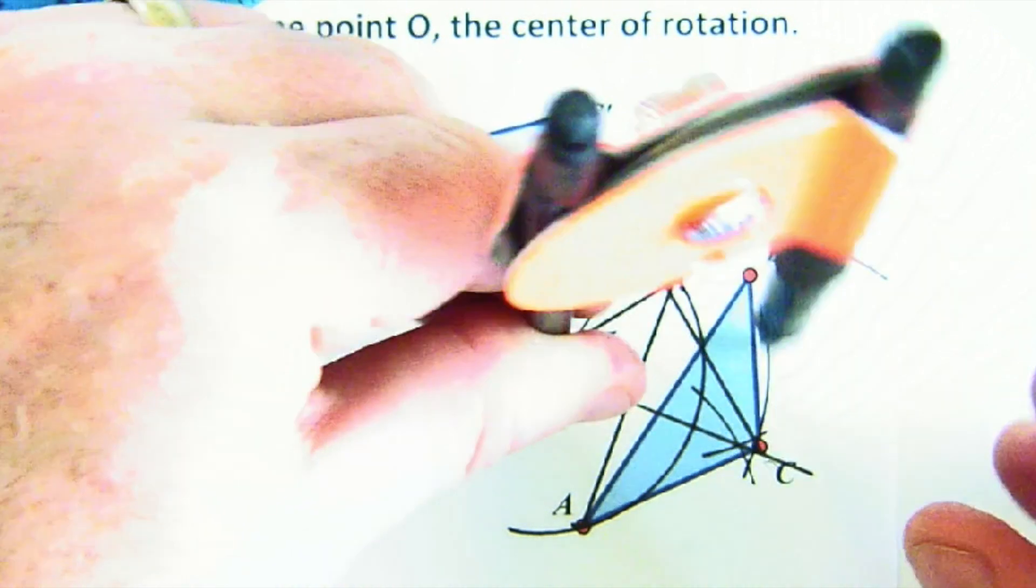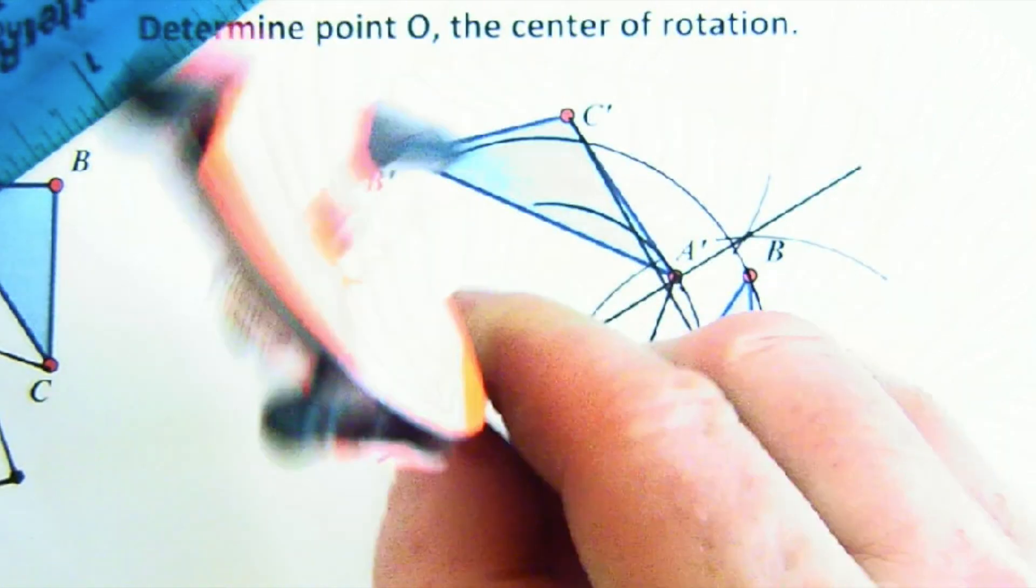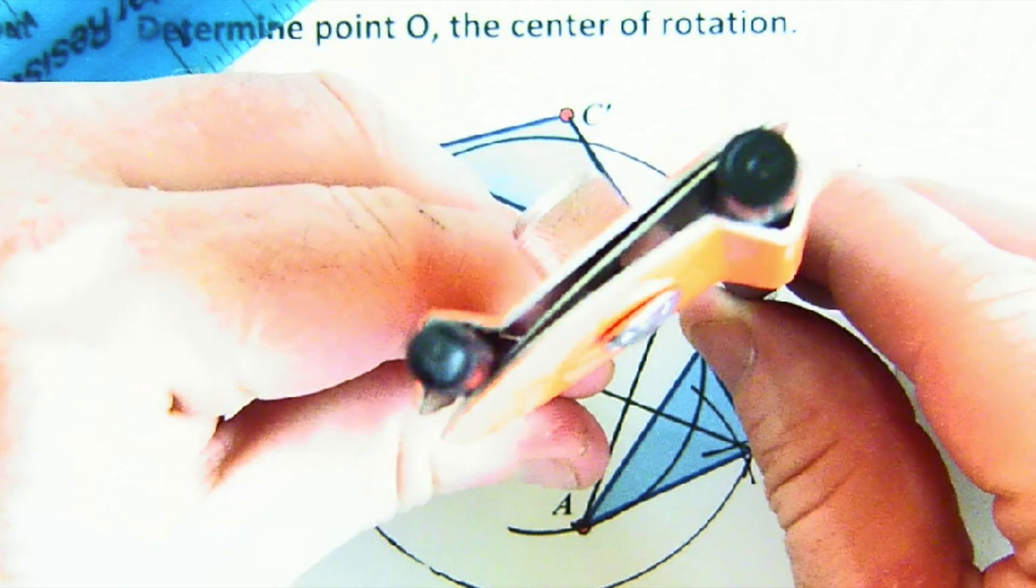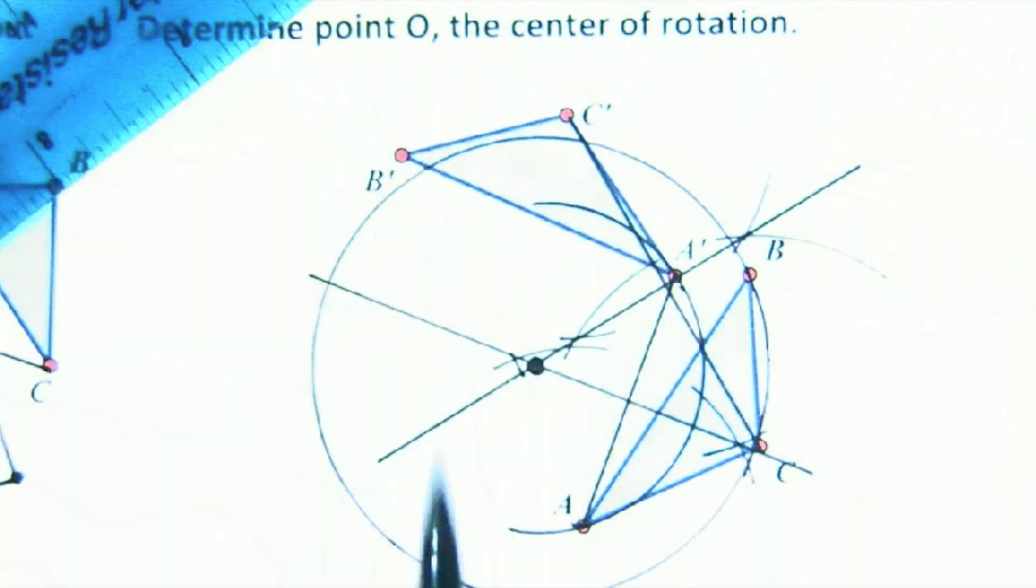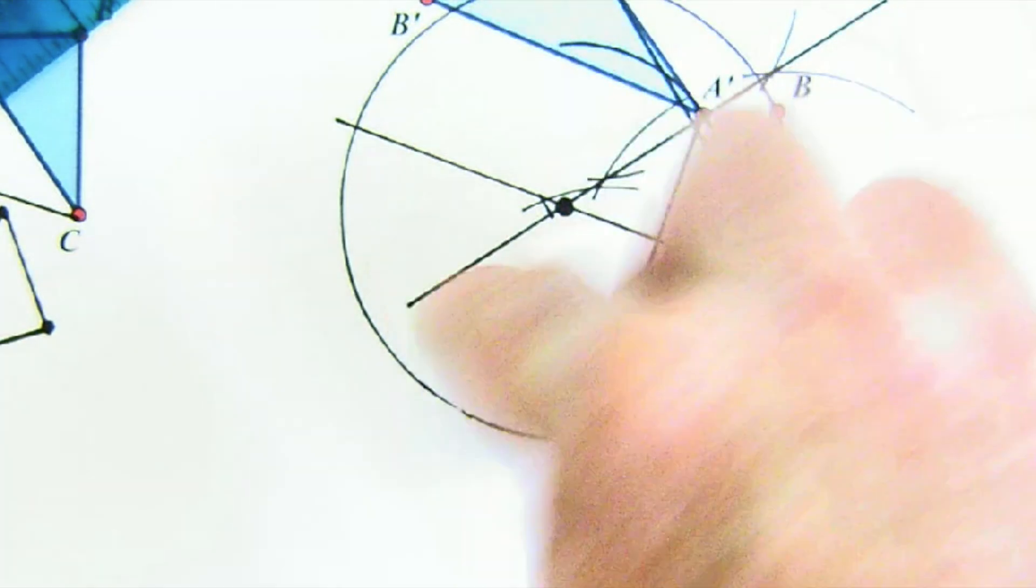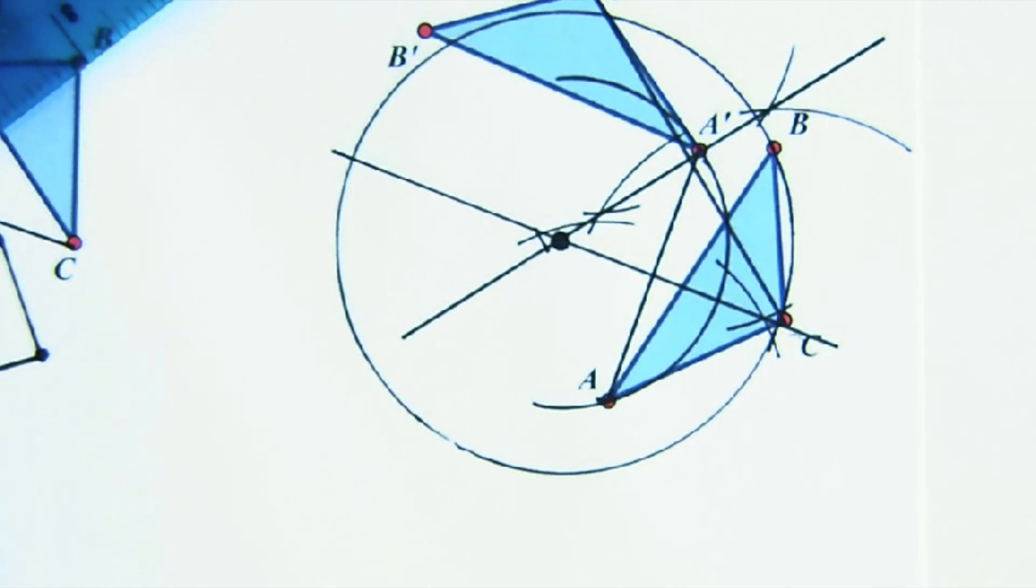I should be able to mark C and C prime, which—see, I'm out a little bit there. I knew I had made a little bit of a mistake. But basically, I should be able to go through B and B prime as well. So the key is two perpendicular bisectors form the intersection, which is the center of rotation.